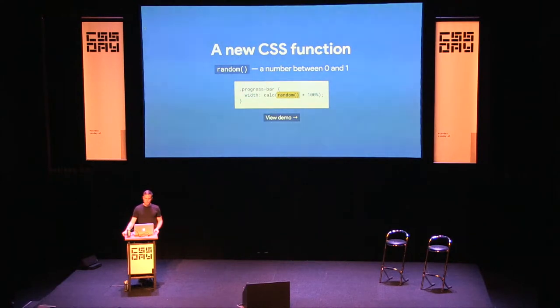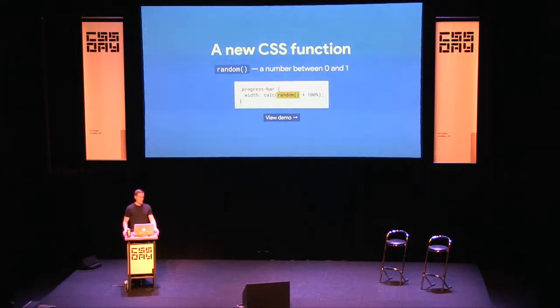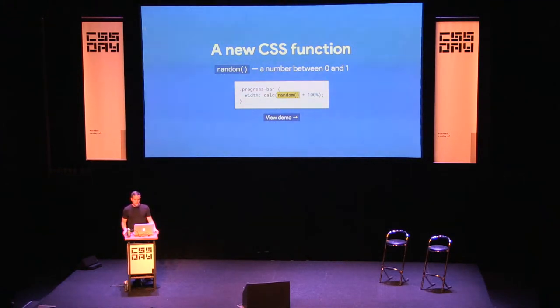I was trying to think about what feature to polyfill, and I didn't want to pick a real feature because I really don't want anyone to use this polyfill. So I picked a fake feature — that decreases the chances of someone using it, though I imagine it's still somewhat likely. Anyway, we're going to polyfill a feature called `random()`: a new CSS function that simply returns a number between 0 and 1, similar to `Math.random()` in JavaScript.